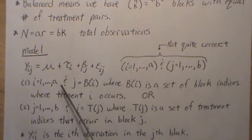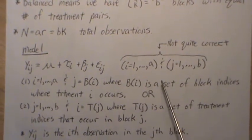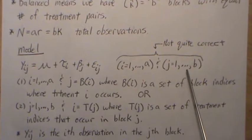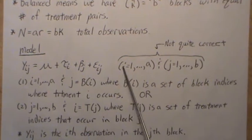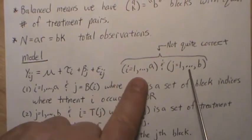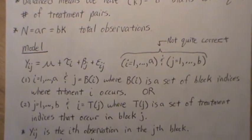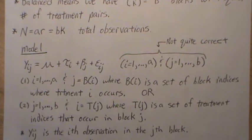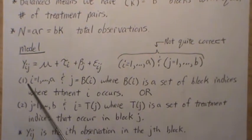For instance, treatment one will occur in blocks one, two, and four, so you can't let J cycle to three when I is one. When there's no constraints or restrictions, it's too much because we get observations that don't exist or are missing. So what we do is introduce a new notation, and there's two common ways for this to happen.